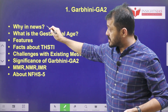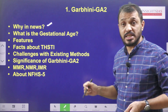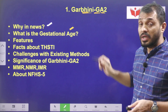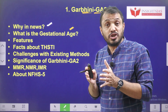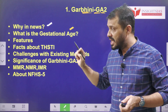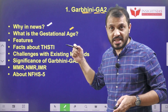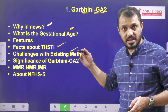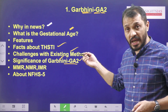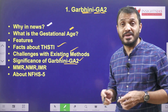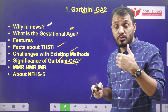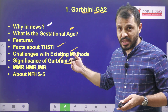First let us try to understand the context — why it is in news. Then what is gestational age? This Garbini GA2 is going to help in determining the age of the foetus. We will discuss the features of this application: who developed it, which organization is behind it, what are the challenges with existing models, and how this model is going to solve those problems. We will also discuss key words related to gestational health such as infant mortality rate, maternal mortality rate, and children below the age of 5.